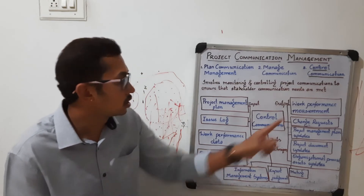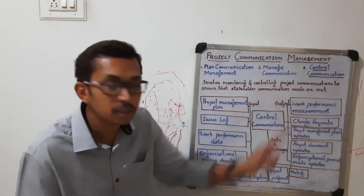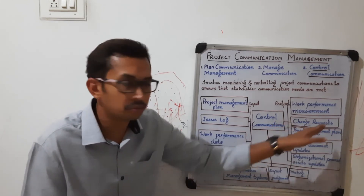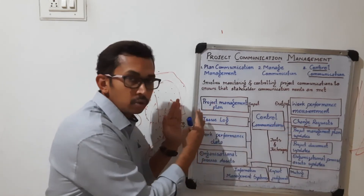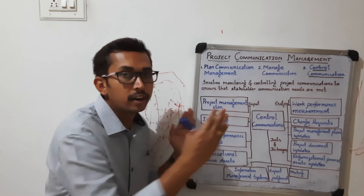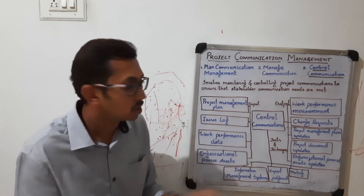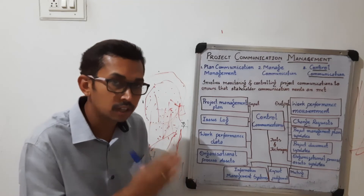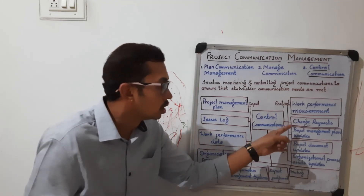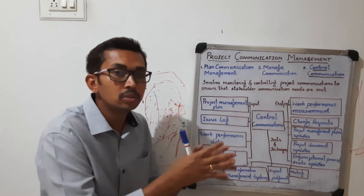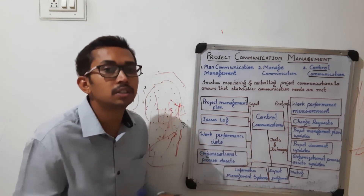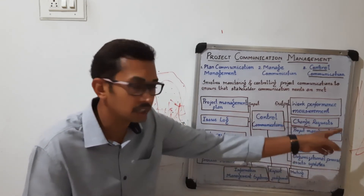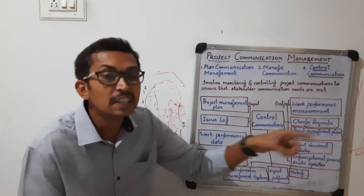The next output is a change request. We compare the actual versus the planned. If there are any changes, a request is made to adjust the system accordingly. That is what we call a change request.